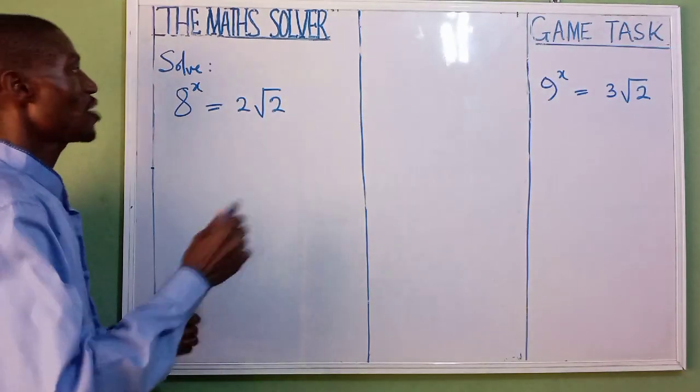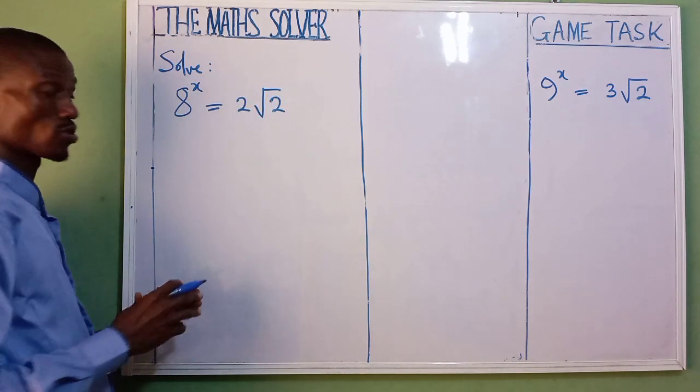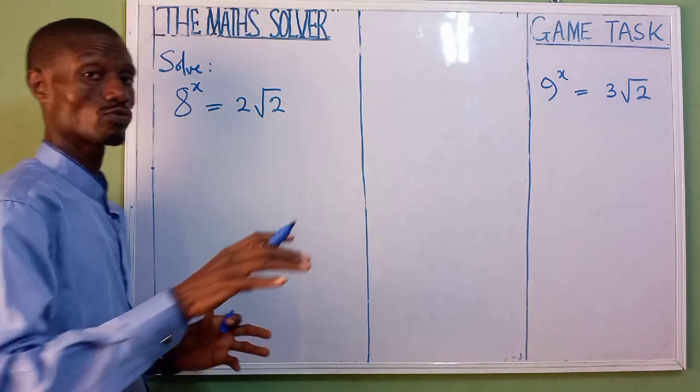You see it here? How are we going to solve it? We have 8 raised power of x equal to 2 root 2. What does that mean? Here we apply the law of indices.